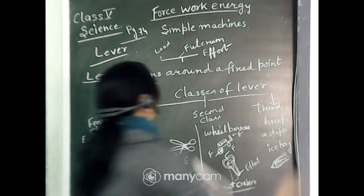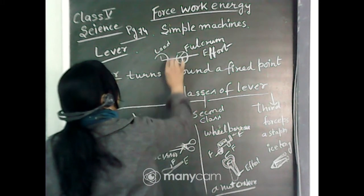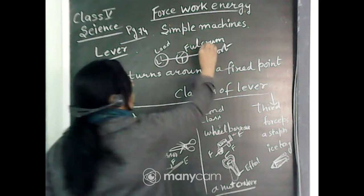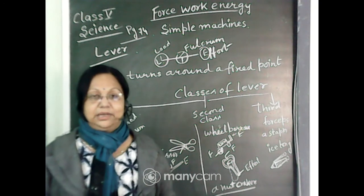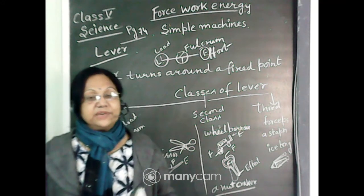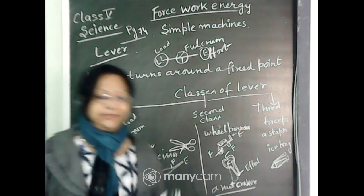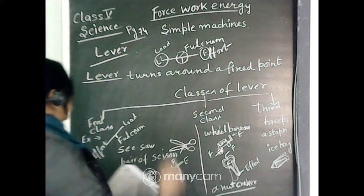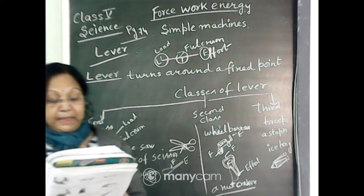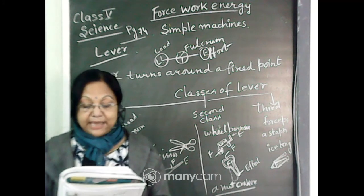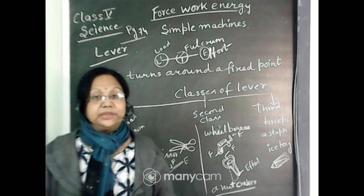The positions of fulcrum, load, and effort change according to the category of lever. There are three kinds of lever: first class, second class, and third class lever. A lever helps us to do work by applying less force and makes our work easier. The terms related to the lever are load, effort, and fulcrum.